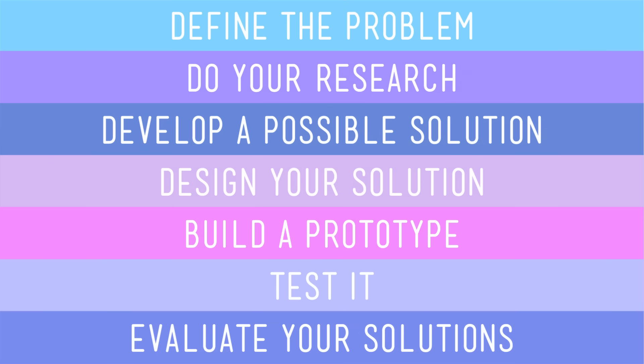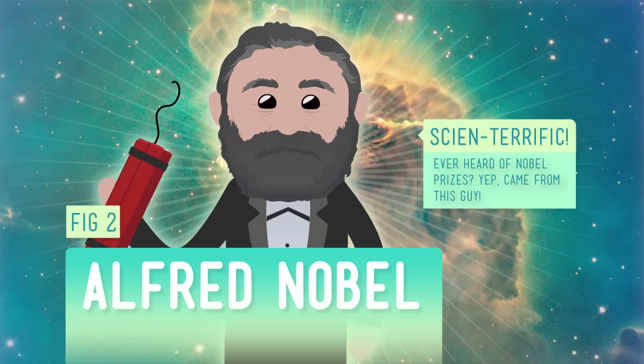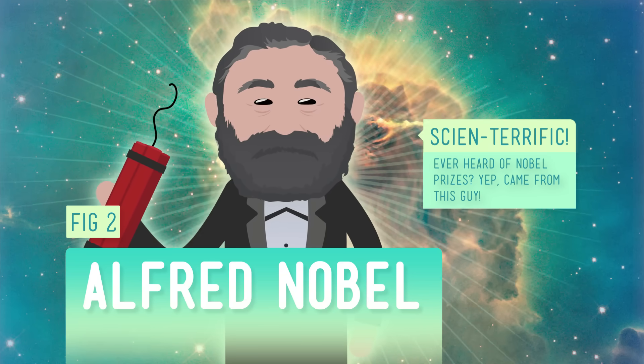Once you've figured out what problem you want to tackle, you need to do your research. You can start by just making a list of questions you have and what information you need to start answering them. You can also look around and find what other things already exist that have tried to solve this same problem — maybe they can be improved. A good example here is the man who helped us blow stuff up: the chemist and engineer Alfred Nobel invented the explosive known as dynamite, not because he particularly enjoyed explosions, but because miners and other people who needed to blow stuff up to do their jobs